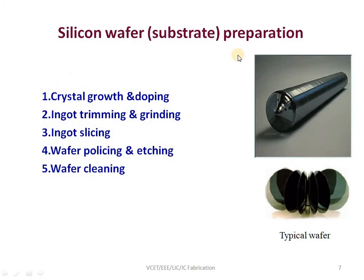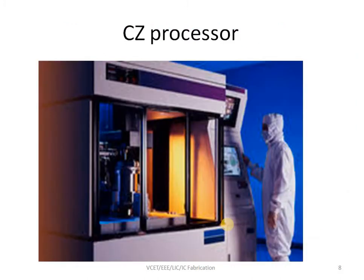The first step, silicon wafer preparation or substrate preparation, contains five sub-steps starting from crystal growth and doping. The base material is sand — silicon crystals are crushed, placed into a crucible, melted, and drawn into an ingot. This ingot is sliced into wafers, polished, etched, and cleaned. This wafer preparation takes place by a process called the Czochralski technique, carried out in a closed chamber.